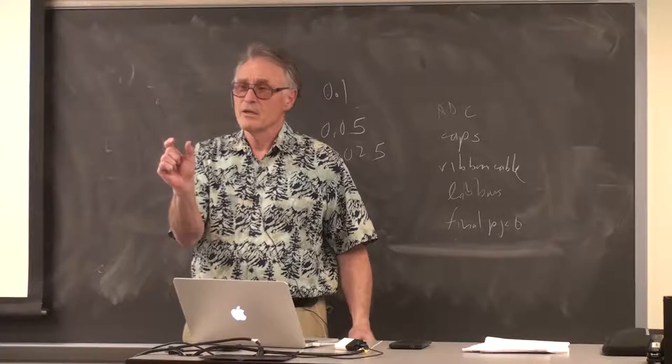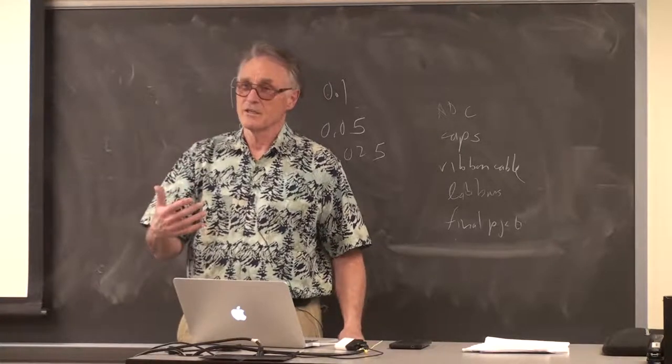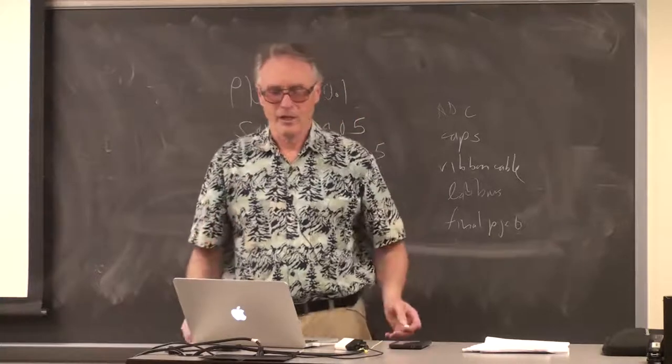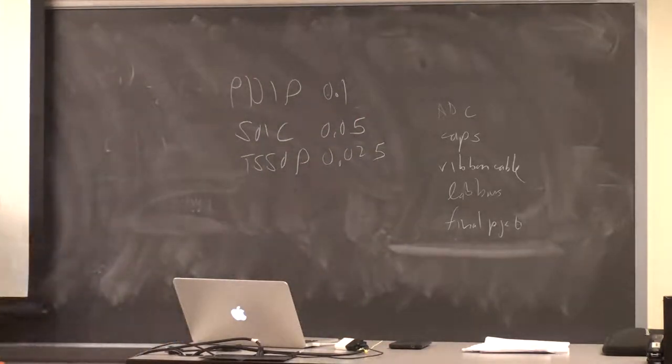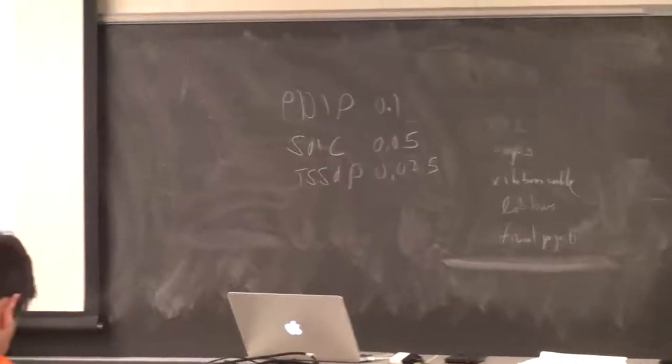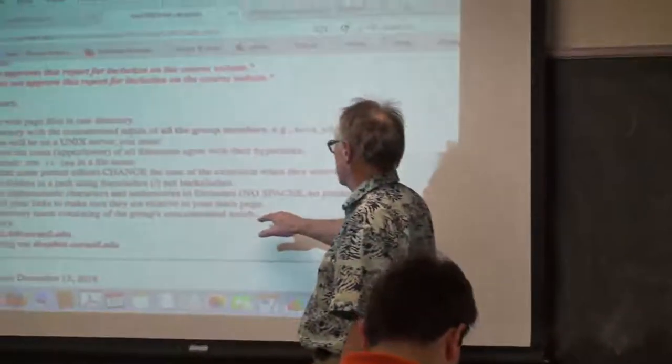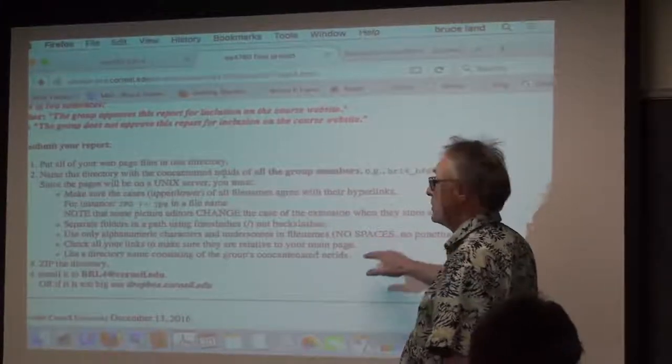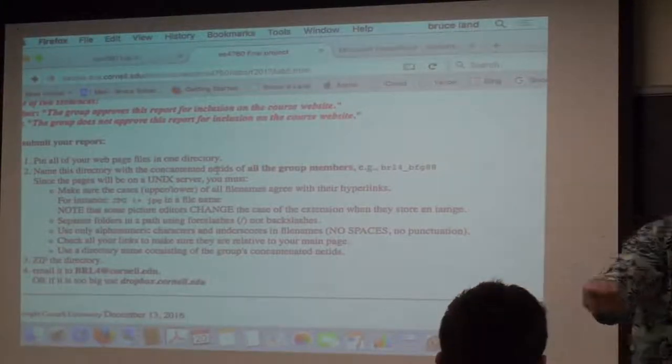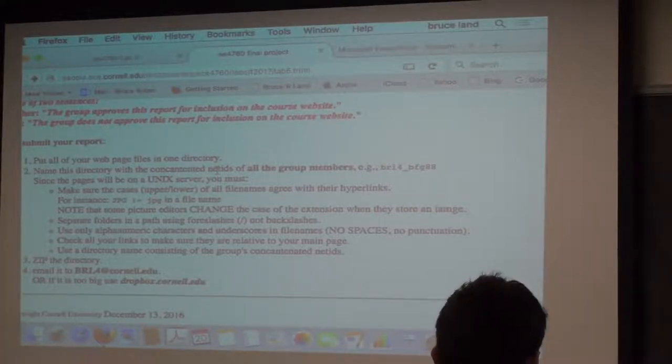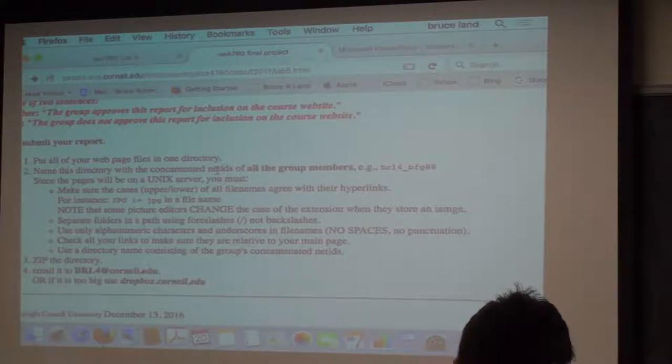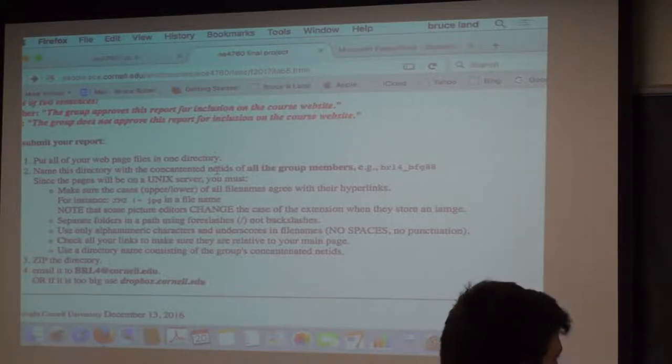So you have to check by sending this whole disaster to yourself and then unzipping it and testing it. That's the only way to do it. Forward slashes, not backslashes. It's Linux. Alpha characters, underscores, no spaces, no punctuation in any file name. Underscore, no spaces. And the directory name consisting of the group's concatenated net IDs.